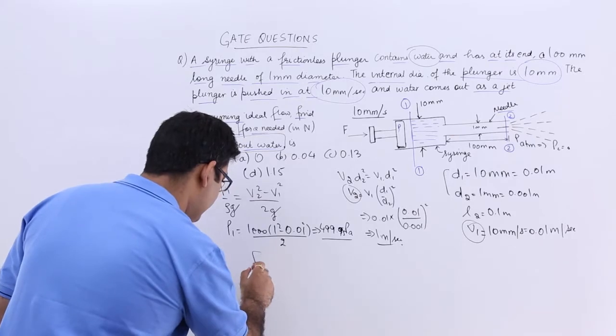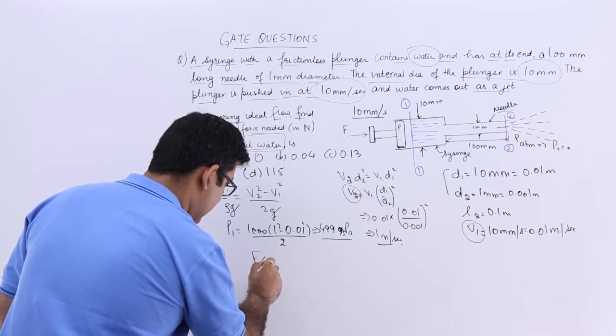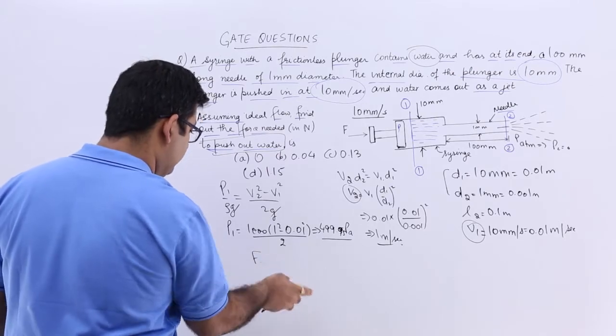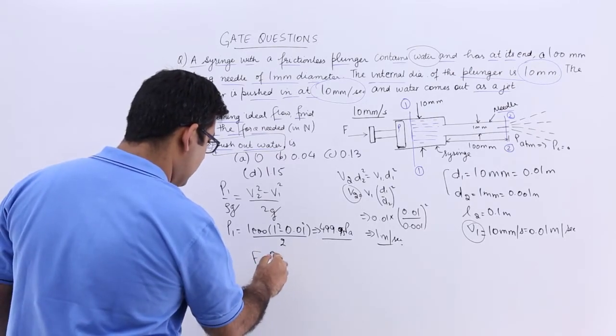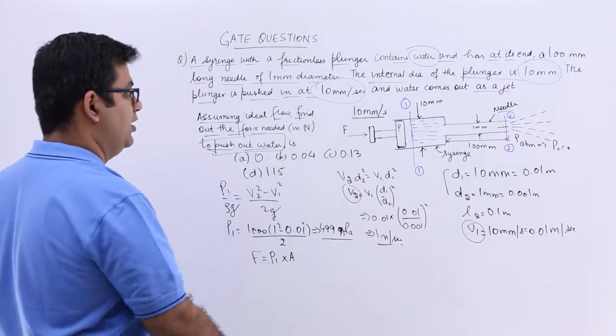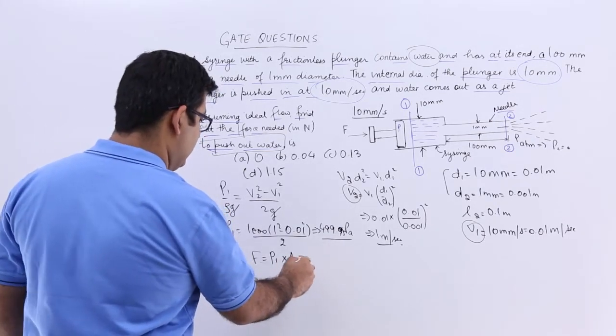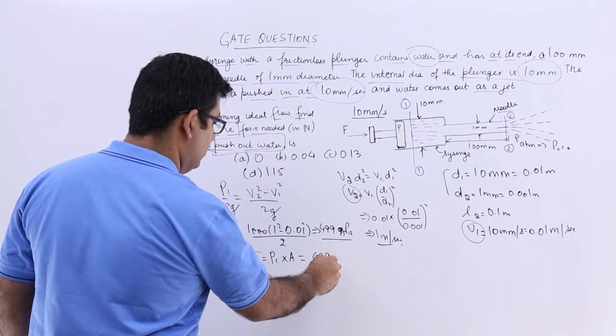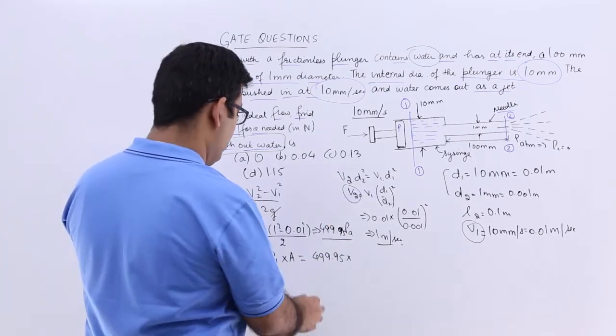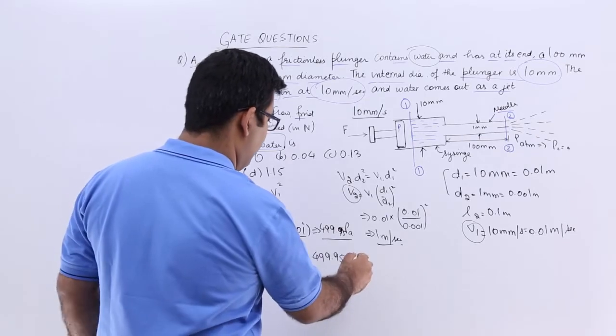So you will have F equal to pressure 1 into area. So your P1 is 499.95 into area 1, this would be pi upon 4 into D1 is 0.01 whole square.